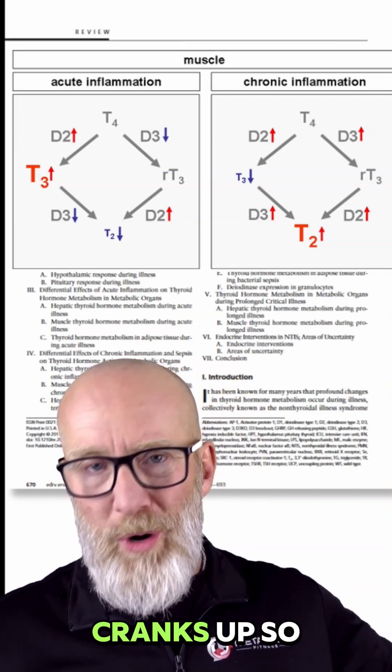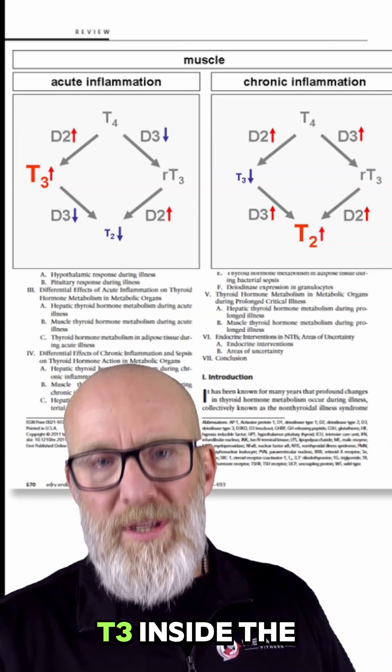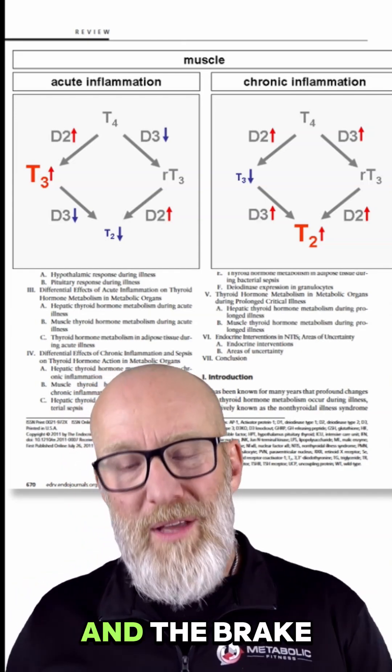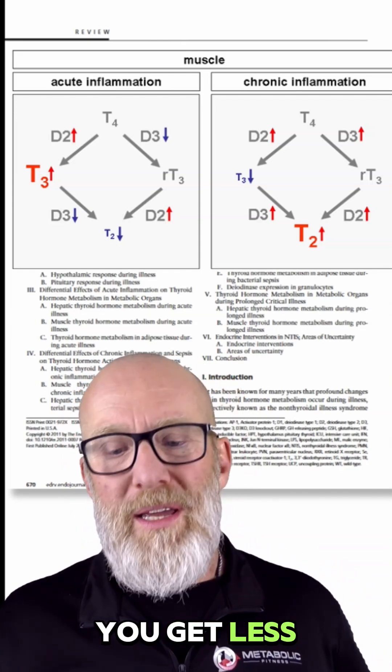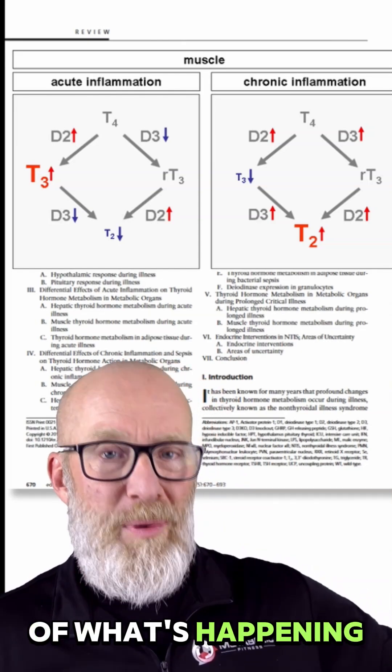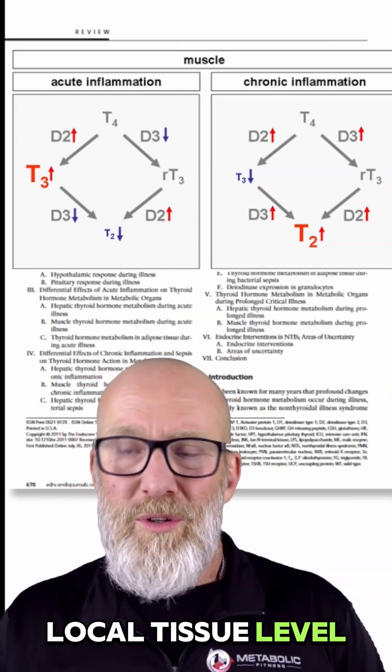So you get more T3 inside the skeletal muscle and the brake turns down, so you get less reverse T3. That's not reflected of what's happening in the serum. That's at a local tissue level.